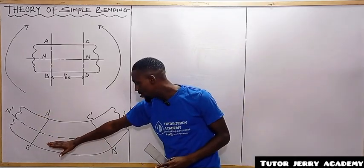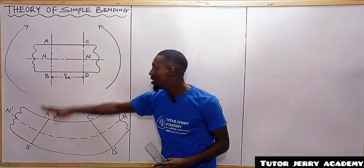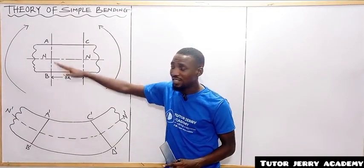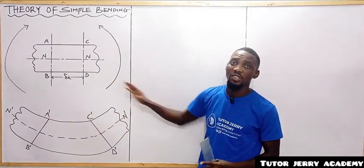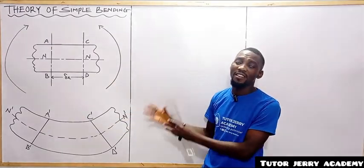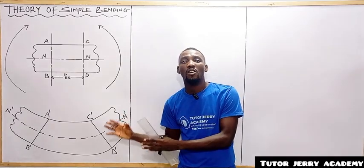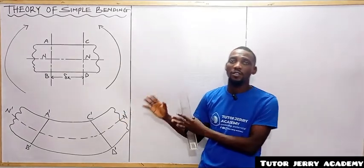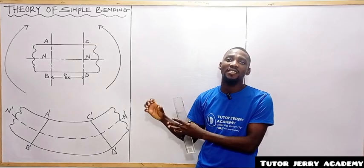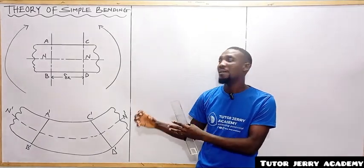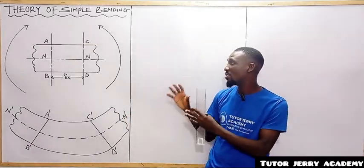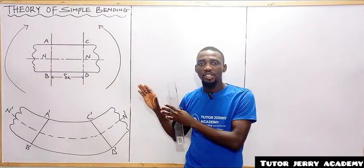This neutral axis remains the same — it is straight and is considered straight; it does not change. The neutral axis is the part of the beam that is not affected by bending. It remains unchanged.